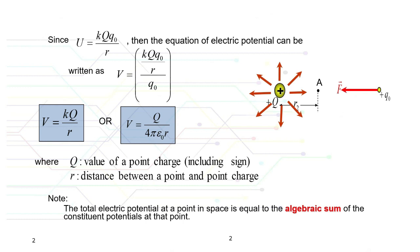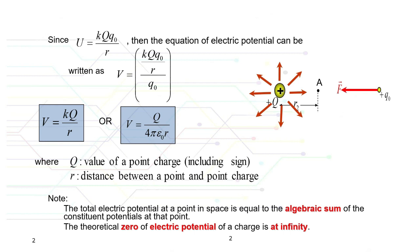As a conclusion, electric potential at a point, for example point A, is known as the energy per unit test charge needed, or the work done on the test charge to locate the charge at point A. The point close to the positive point charge is known as high potential and vice versa. To calculate the total electric potential at a point in space, calculate the algebraic sum of the constituent potentials at that point. The theoretical zero of electric potential is at infinity.